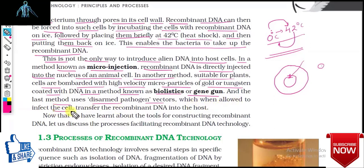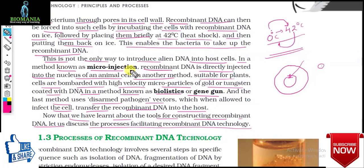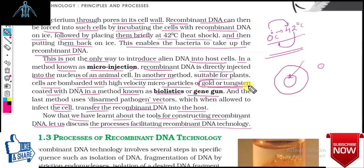This is not the only method. In microinjection, recombinant DNA is directly injected into the nucleus of an animal cell. In another method, suitable plant cells are bombarded with high-velocity microparticles of gold or tungsten coated with DNA — in a method known as biolistics or gene gun. The last method uses disarmed pathogen vectors such as Agrobacterium tumefaciens for plants or retroviruses for animal cells.